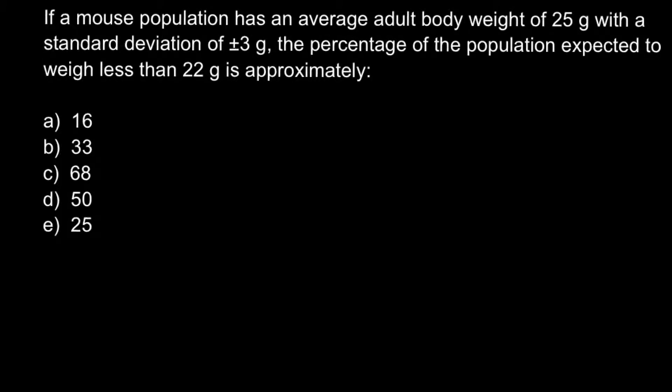This video is going to be about quantitative genetics. Today's problem: if a mouse population has an average adult body weight of 25 grams with a standard deviation of plus or minus 3 grams, the percentage of the population expected to weigh less than 22 grams is approximately — and here are five answers to choose from.